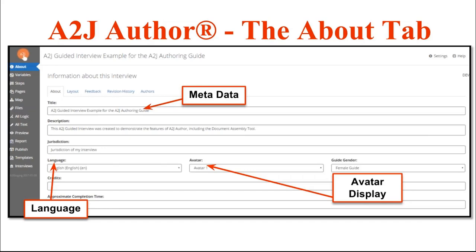Metadata includes information like the title of the interview, a description, the jurisdiction where this interview is going to be used. You can choose the language — A to J Author currently supports 14 different languages. You can set the avatar's skin tone: skin tone 1, 2, and 3. And you can also select the gender for the guide avatar.